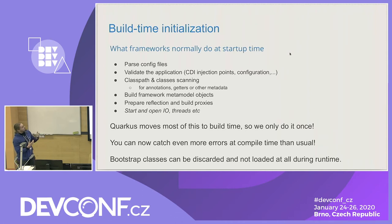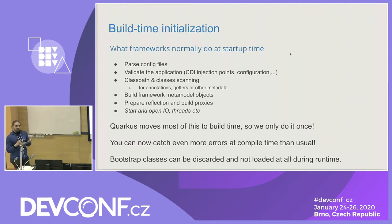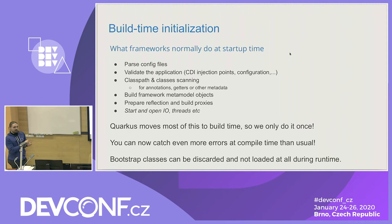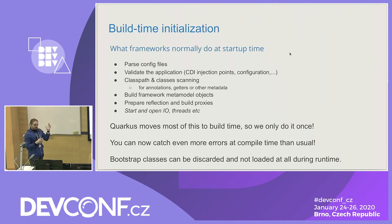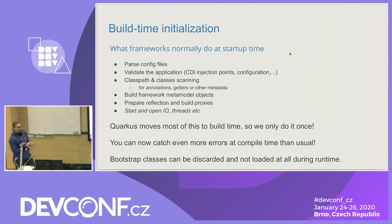Most of these things like parsing the config files, scanning the annotations — everything listed here — is done at build time. The result of this scanning and validation is basically serialized into your application as so-called recorded bytecode. And then when your application starts, just the recorded bytecode, which is highly optimized, will be executed. This also means the bootstrap classes that do the parsing and config reading can be discarded after the build, so we don't have to use them at all during run time, which makes your application even lighter in terms of both CPU usage and memory usage.